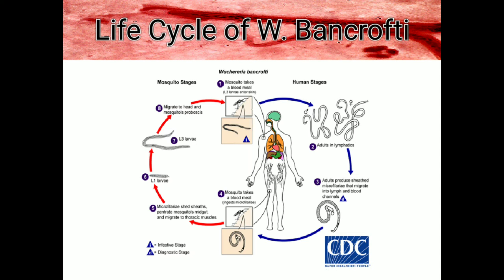The life cycle actually undergoes two stages: the mosquito stage and the human stage. During a blood meal, an infected mosquito introduces third-stage filarial larvae into the skin of the human host, where they penetrate into the bite wound and develop into adults that commonly reside in the lymphatics. These adult worms produce microfilariae that migrate into lymph and blood channels. When a mosquito ingests the microfilariae during a blood meal, the microfilariae lose their sheaths, and some of them work their way through the wall of the proventriculus and cardiac portion of the mosquito's midgut.